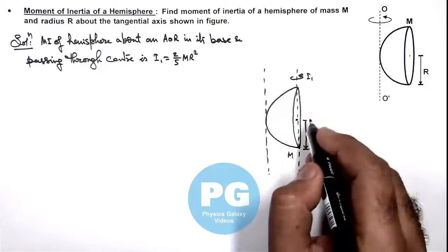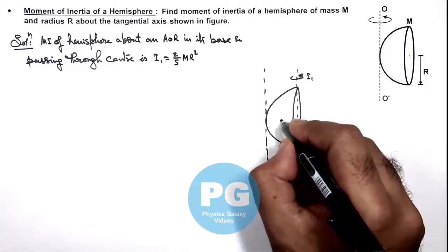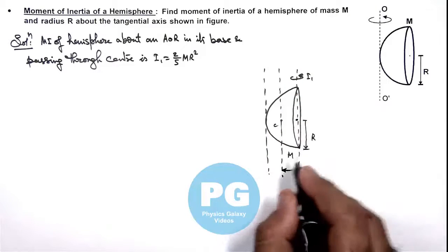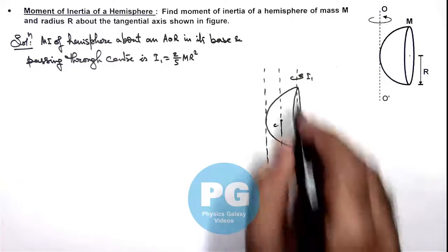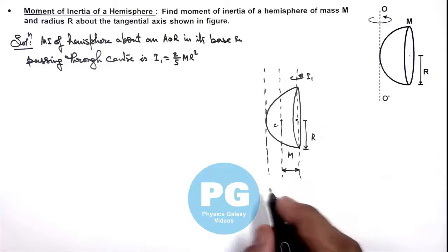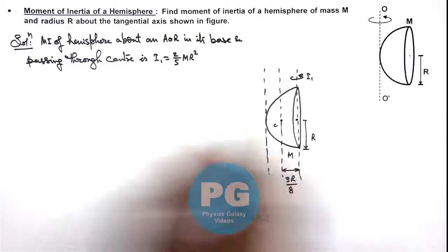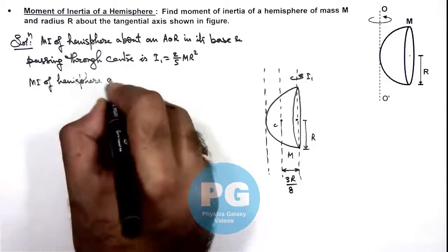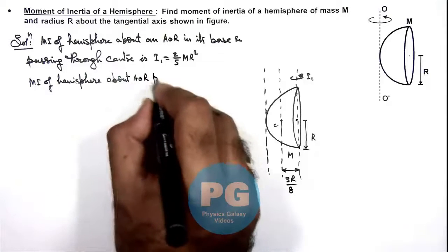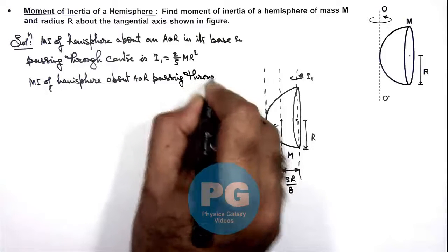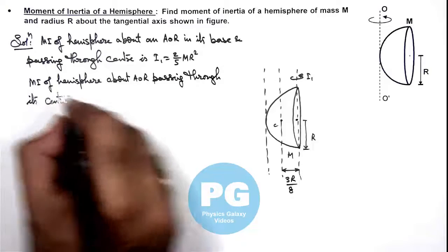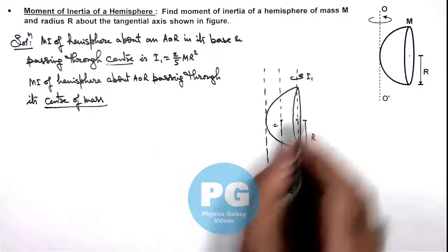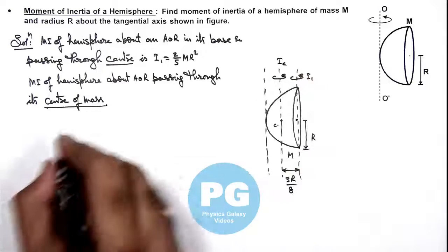Using this moment of inertia, we can find out the moment of inertia about an axis passing through its center of mass and parallel to this axis. The distance of the axis passing through the center of mass and parallel to the axis in its base is given as 3r/8. In the first case we calculated about the axis passing through the center; now we are calculating the moment of inertia about an axis passing through the center of mass, which we can call Ic.